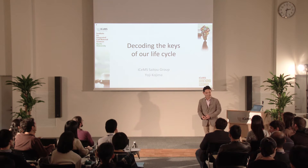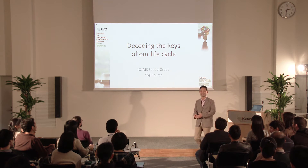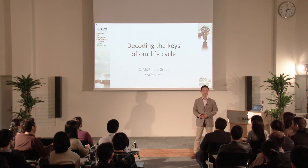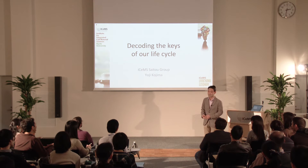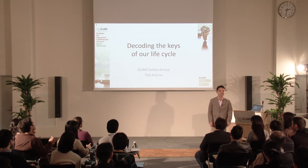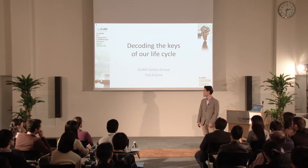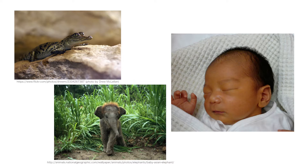Good afternoon everyone. I'm Yohji Kojima from Saito Group. The title of my talk is Decoding the Keys of Our Life Cycle. My story starts from here. This is the photo of a baby crocodile, a baby elephant, and a one-year-old baby.